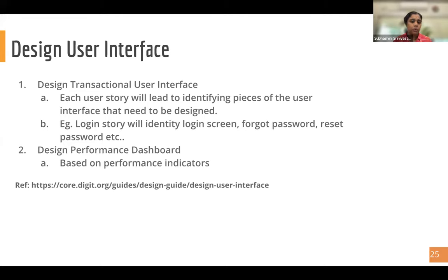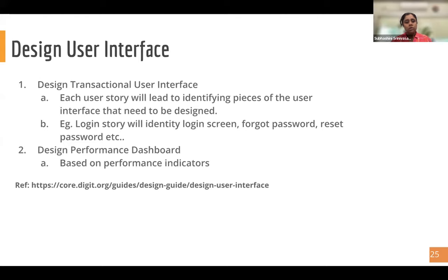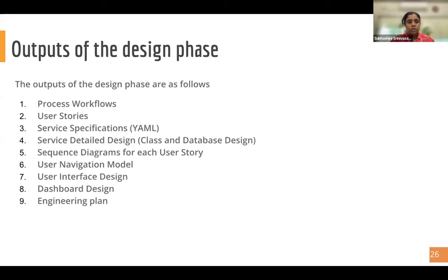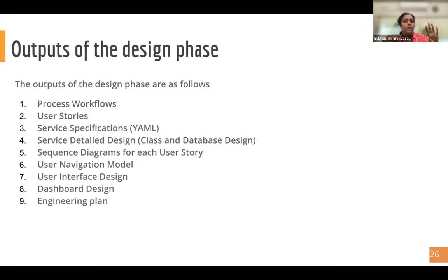Designing the performance dashboard is the second UI piece — this is your admin dashboard or decision support dashboard. You would have defined these metrics or indicators ahead of time, so you need to come up with a UI layout design — where you want to show which charts arranged in a certain fashion. The actual visualizations themselves can be just configuration on the back end; you don't have to write from scratch. The UI layout is also just config. The typical outputs from the design phase are: process workflows, user stories, API specs in YAML, detailed low-level design, class and database design, sequence diagrams, user navigation model, user interface design, dashboard design, and an engineering plan with estimates.